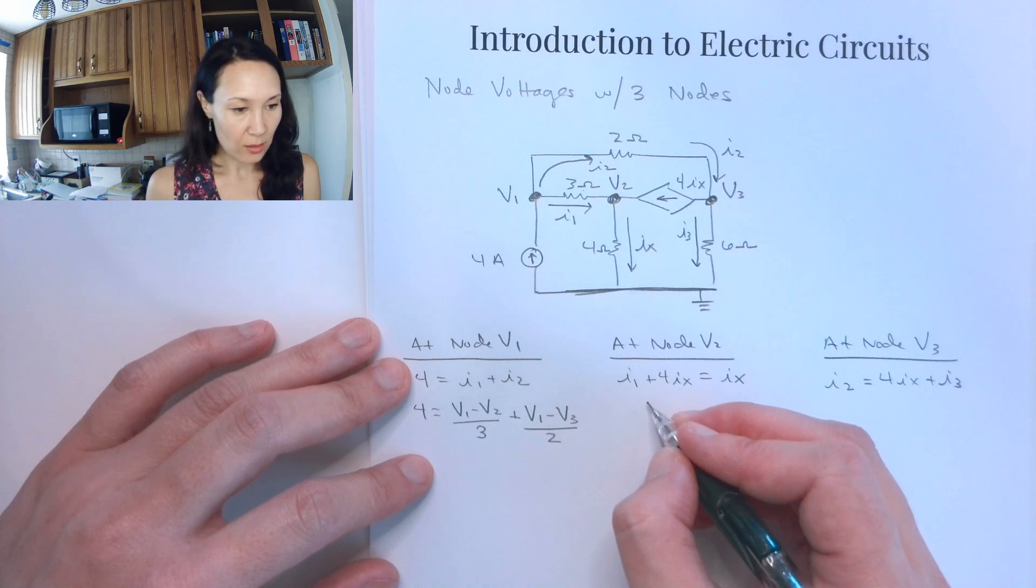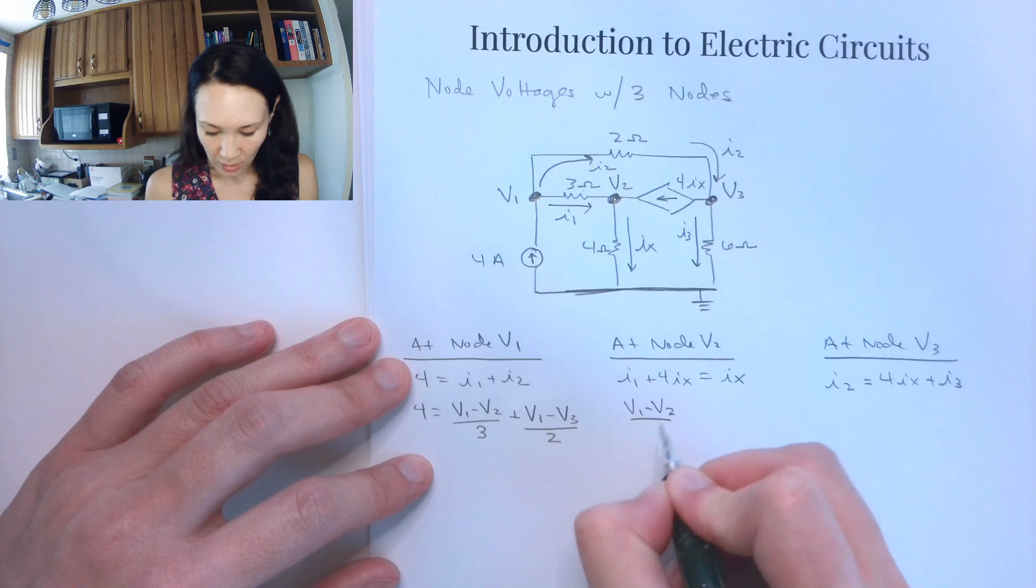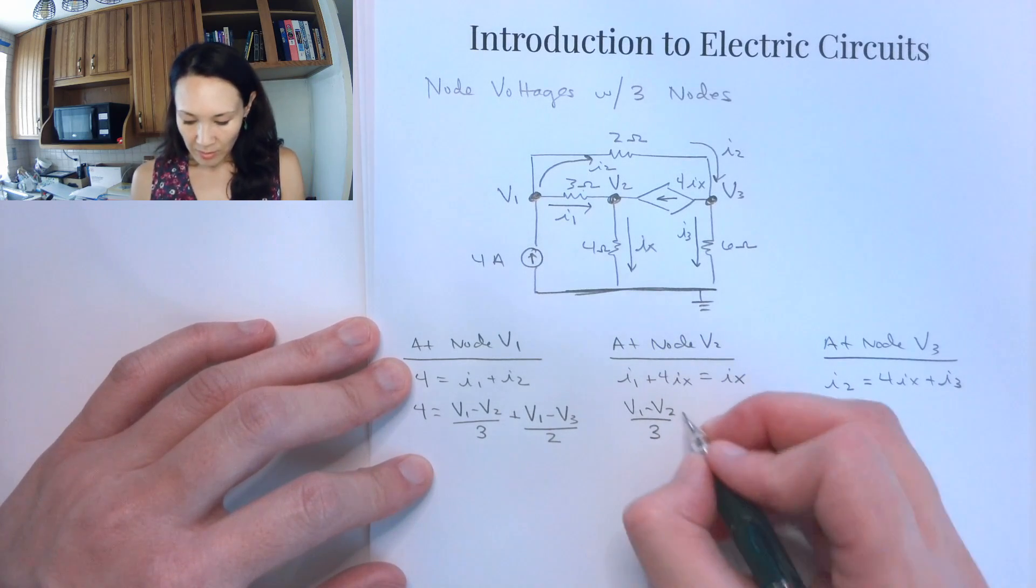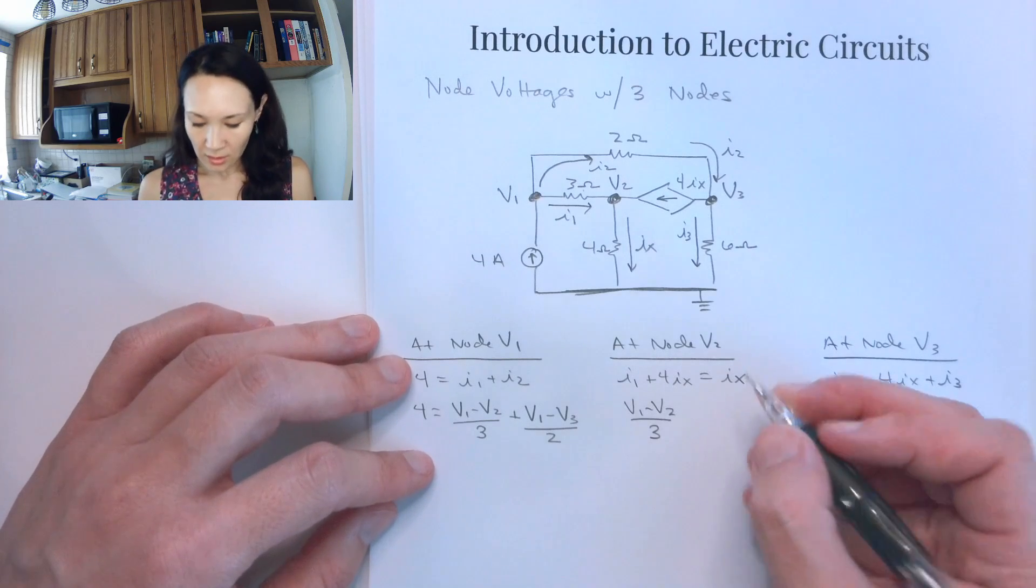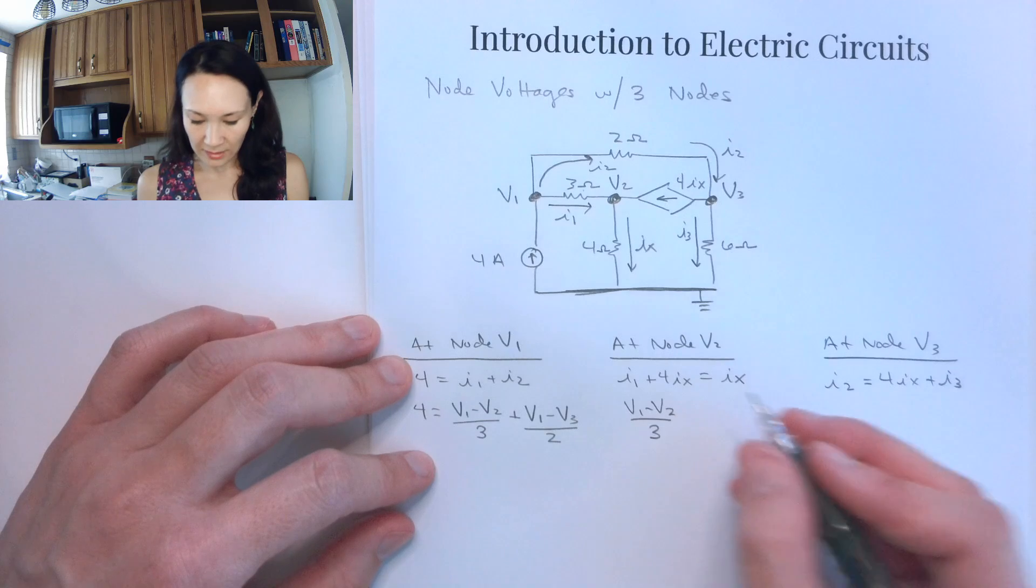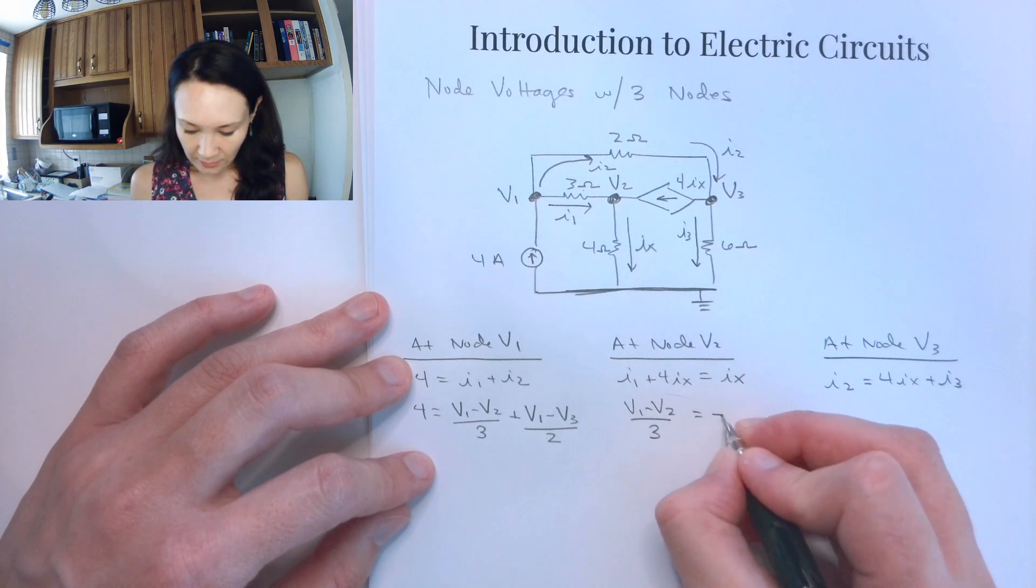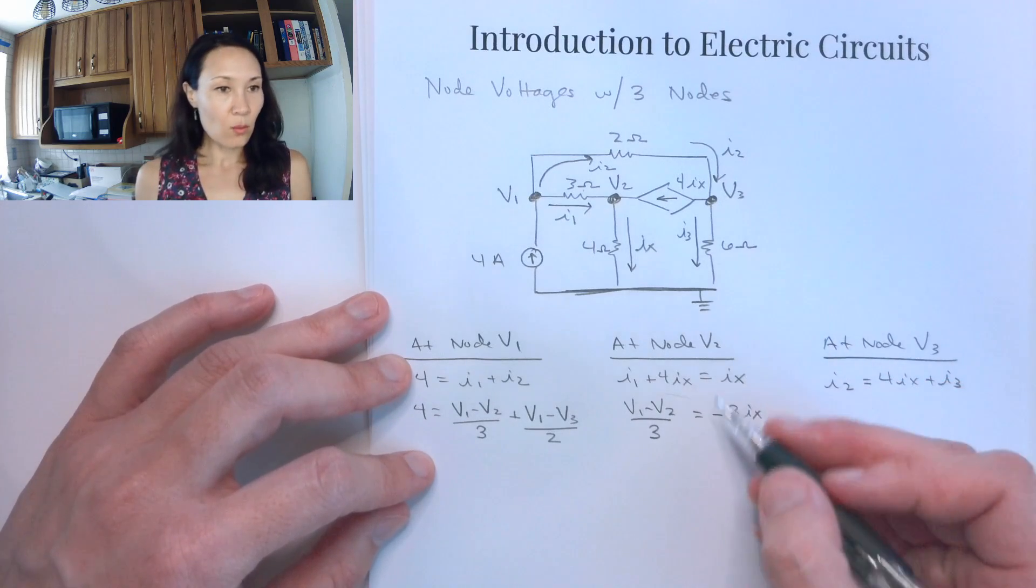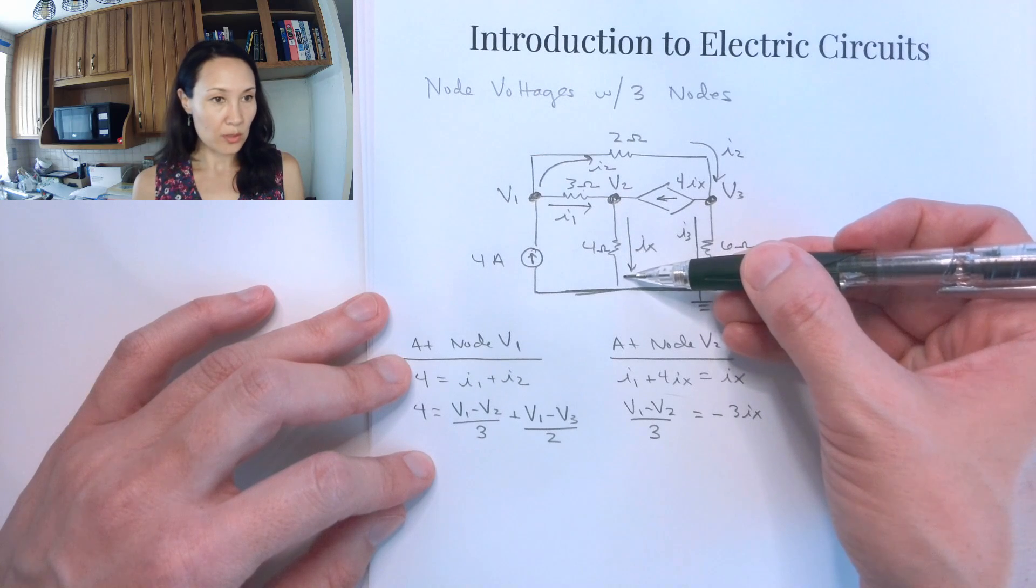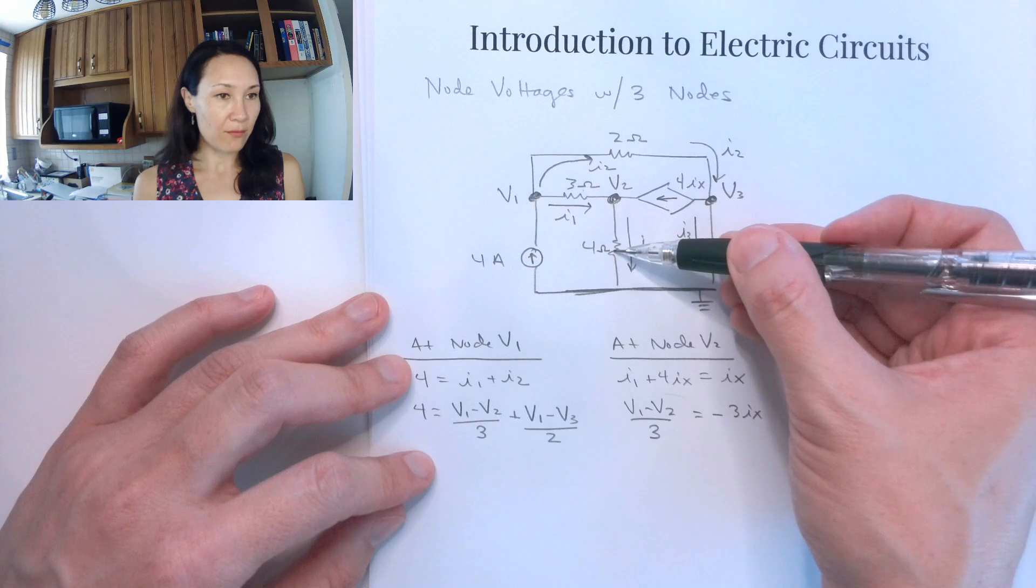So we'll do the same thing at node 2. I1 I'm going to replace with V1 minus V2 over 3. I still have this 4 IX, but if I can change this equation to kind of not be in terms of IX, that's going to be better for me. So let me just bring this over to the other side. This is negative 3 IX. So what is IX? IX is the current that goes through this 4M resistor. So I can actually rewrite this as V2 minus 0 divided by 4.